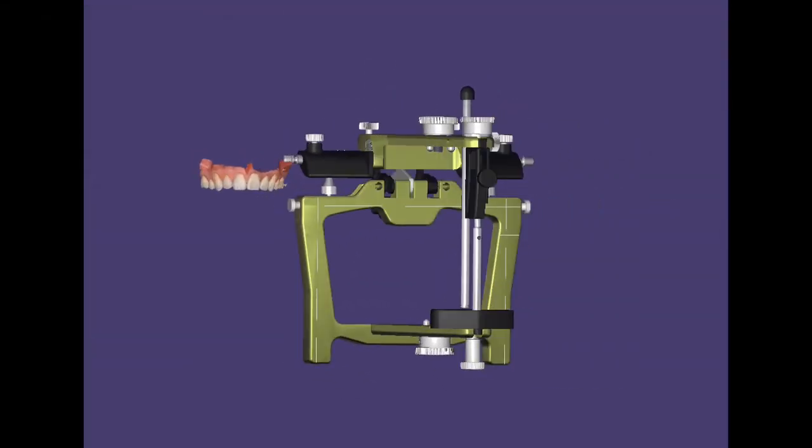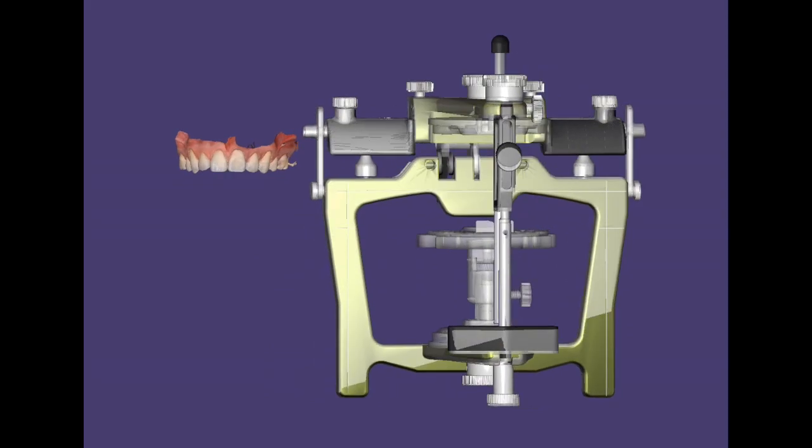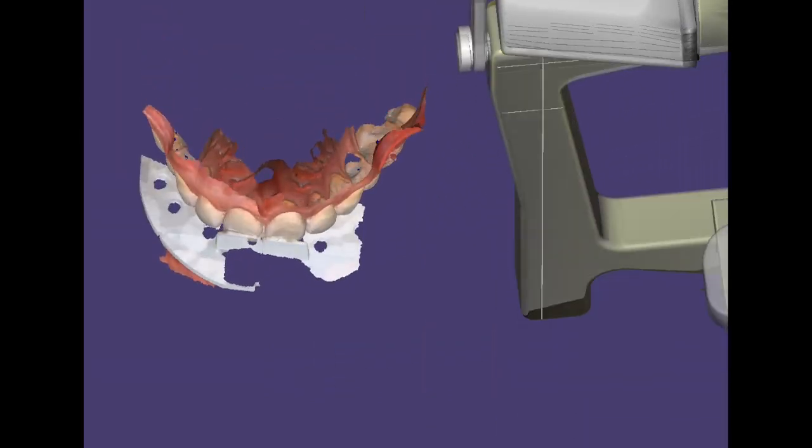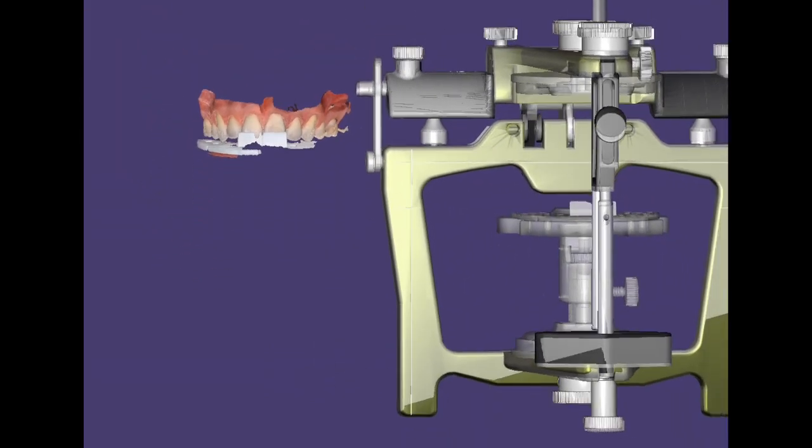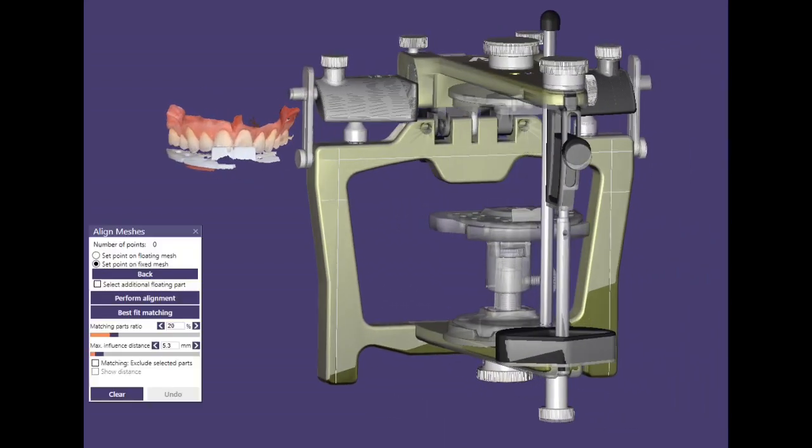Well hello everybody, this is a simplified version of a technique that I published years ago. Basically what you see right here is an upper model and then a bite recording part of the index tray. This is the AD2 articulator in the system.